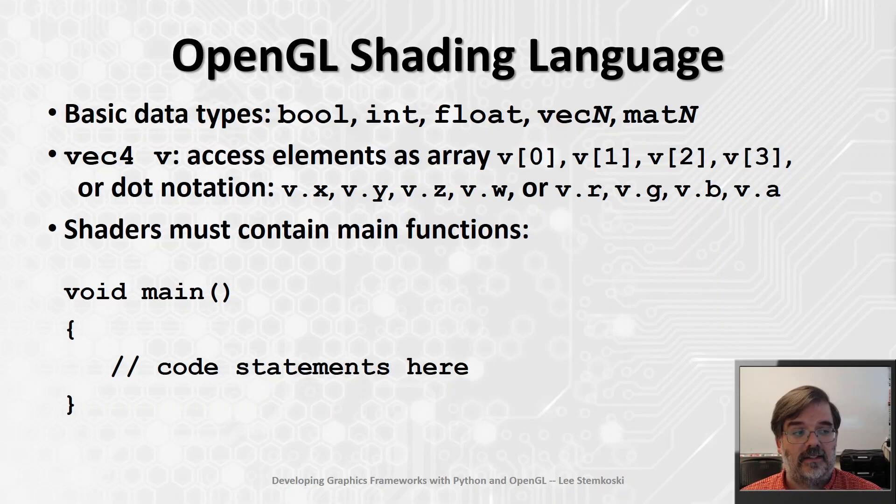The basic data types in GLSL are Booleans, integers, floating-point numbers, and also vectors and matrices. Here, vecN and matN, or matrix N. The N could have the value 2, 3, or 4. This would be vectors with 2, 3, or 4 components, depending on the value of N. And this data type could represent matrices that are 2 by 2, or 3 by 3, or 4 by 4.